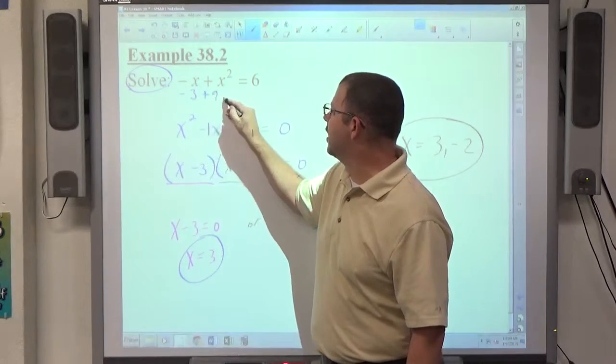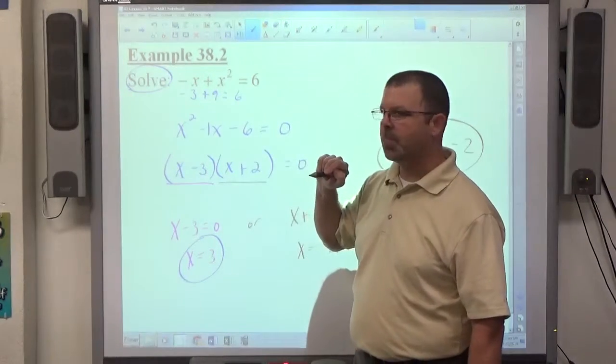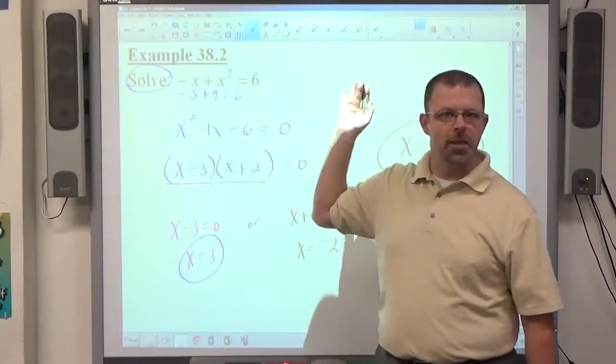That will be negative 3 plus 9 equals 6. What's negative 3 plus 9 equals 6? That's true. So, true is good.